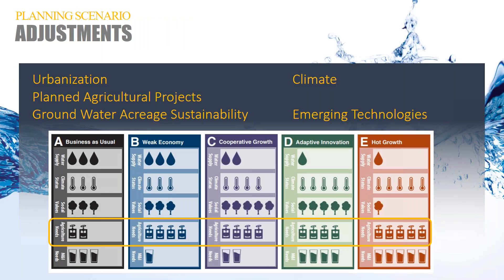Moving to planning scenario adjustments: the goal was to take the Colorado Water Plan narratives of each planning scenario and turn them into quantitative numbers. We certainly had help doing this — our original technical advisory group was able to take our proposed methodology and provide lots of good improvements. I have met with several stakeholders throughout this process, talking to them about what these narratives look like and how they will be applied specifically to their basins.